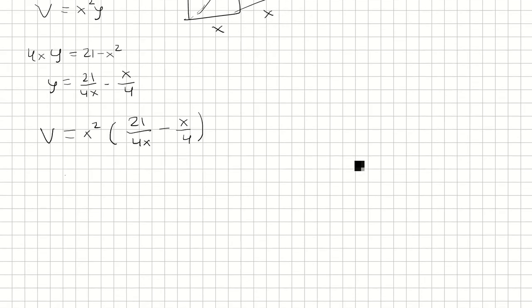So this is y, and so we'll plug it into the volume equation. So we'll distribute this, we have 21x over 4 minus x cubed over 4. We'll take the derivative now, that's going to be 21 over 4 minus 3x squared over 4. Set that equal to 0.